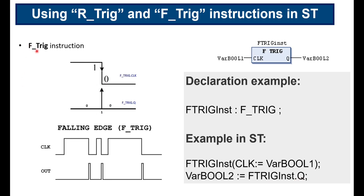F_TRIG works in a similar way. The main difference is that it detects the falling edge — F indicates we are detecting the falling edge. Whenever there is a falling edge at the input side we will have a pulse at the output. You can see three cases where we have the falling edge and the corresponding short pulse. It is declared and used in a similar way to R_TRIG.